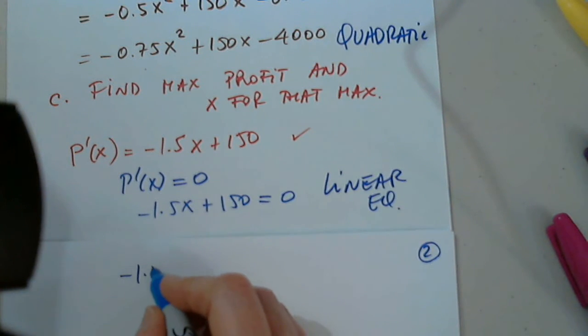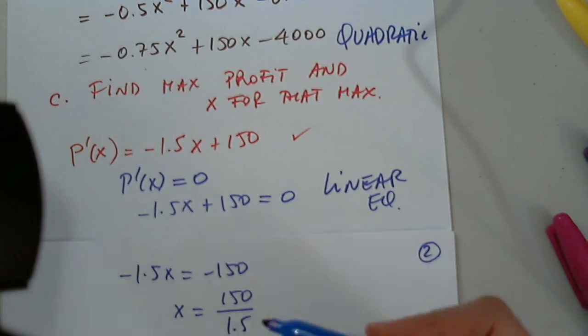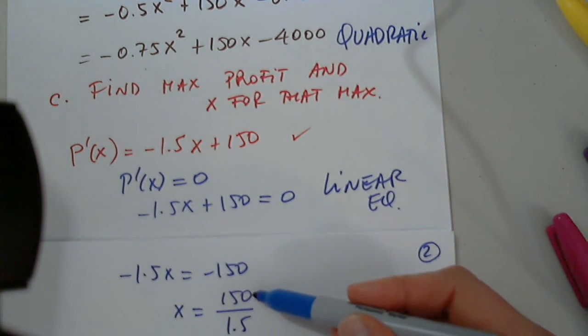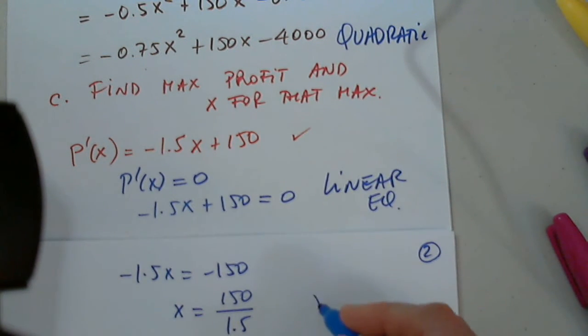So, we move 150 and we divide by 1.5. So, imagine that you have to multiply the top and the bottom by 10. So, this would be 1500 divided by 15. So, X equals 100 units or suits.